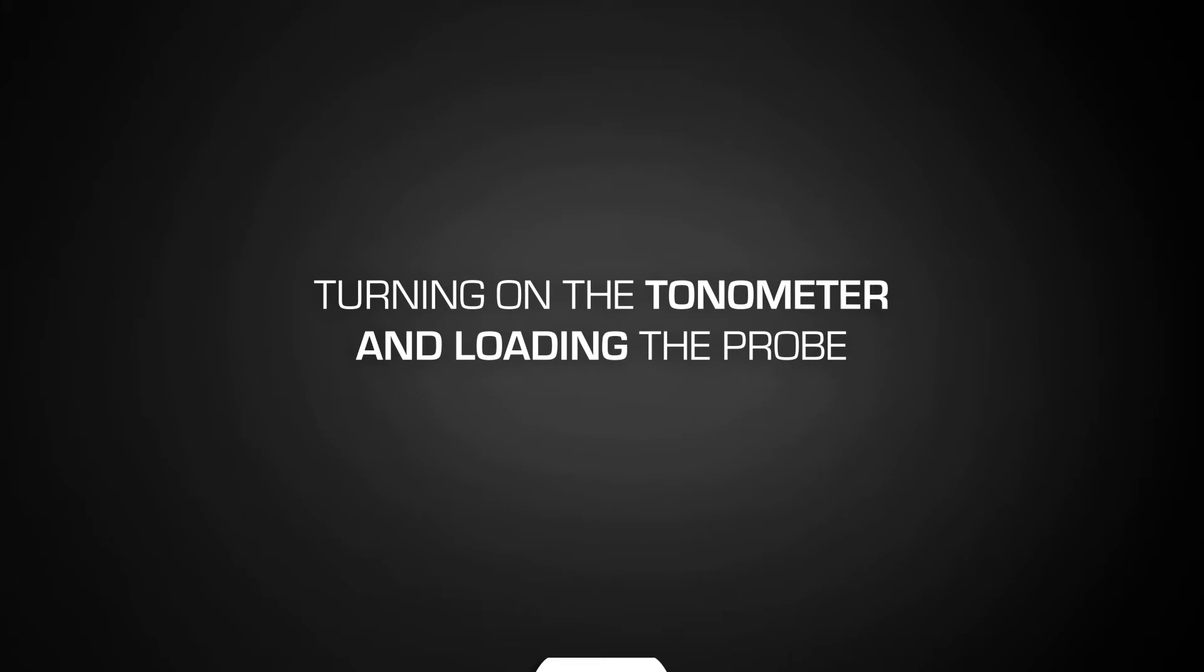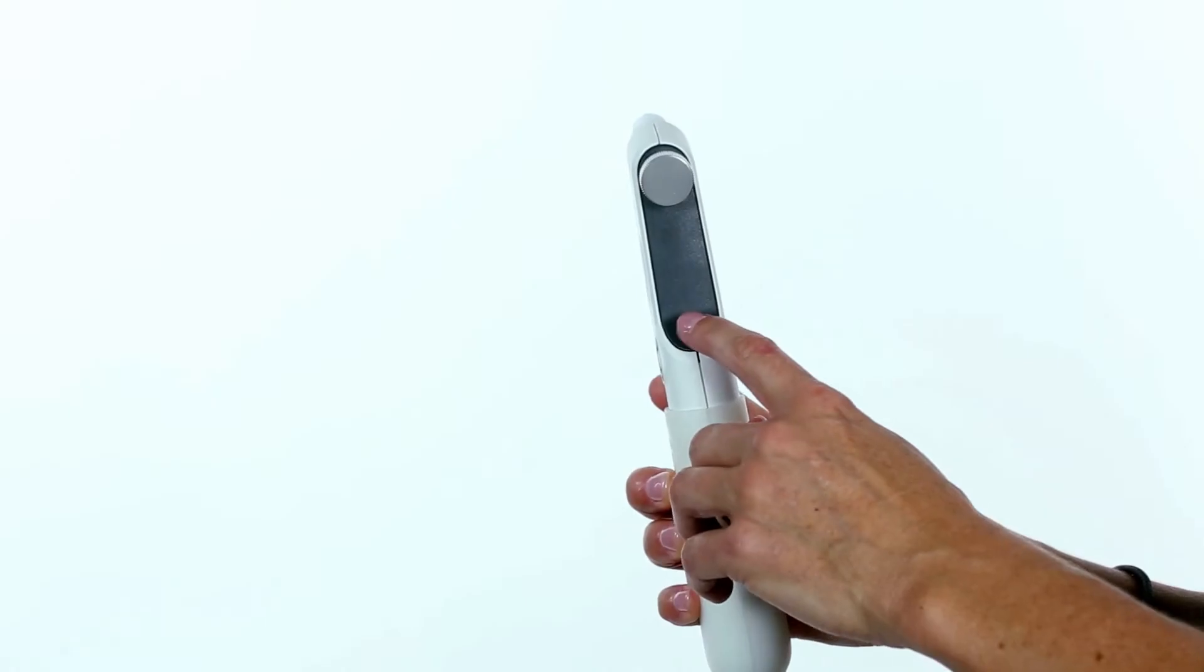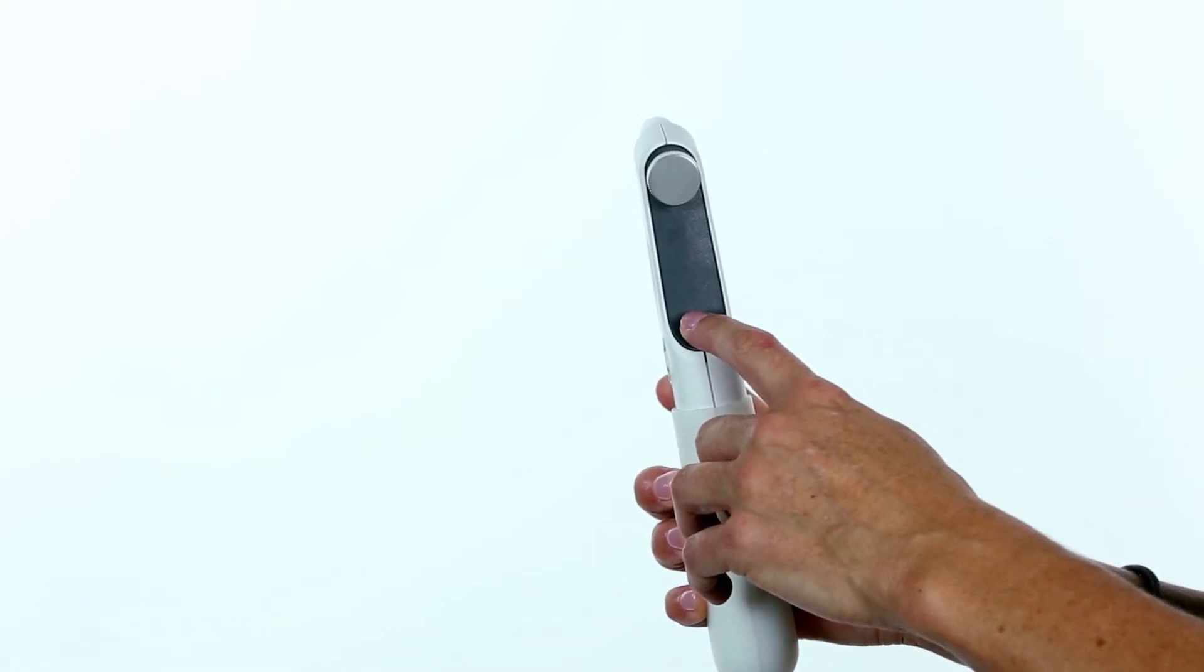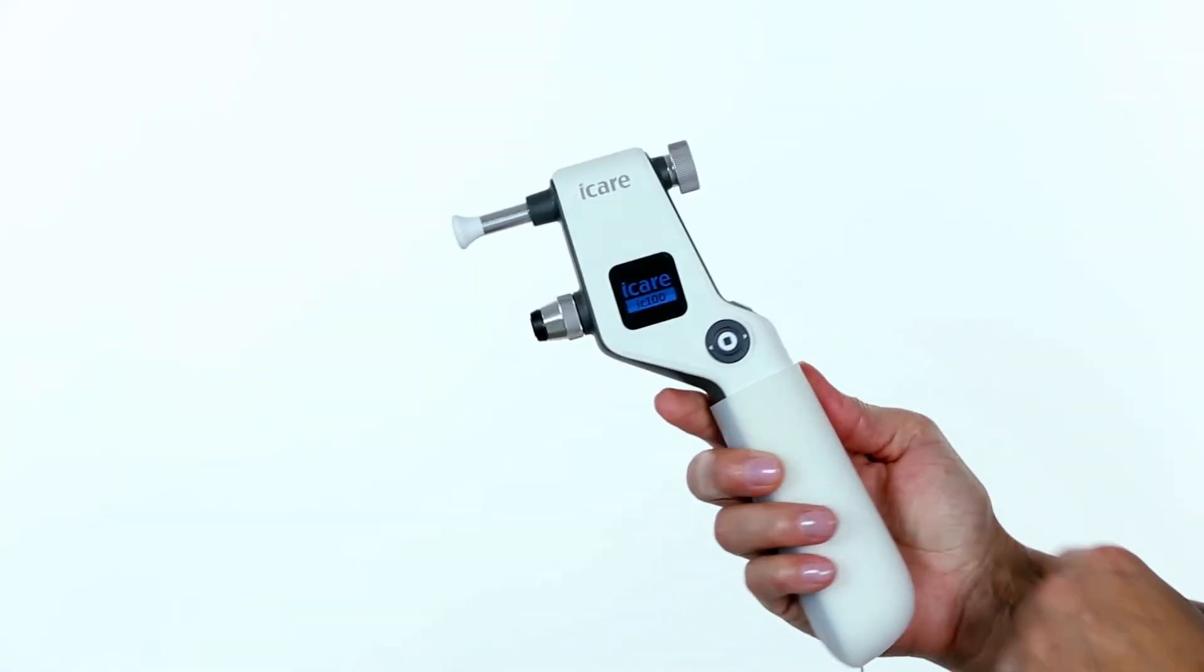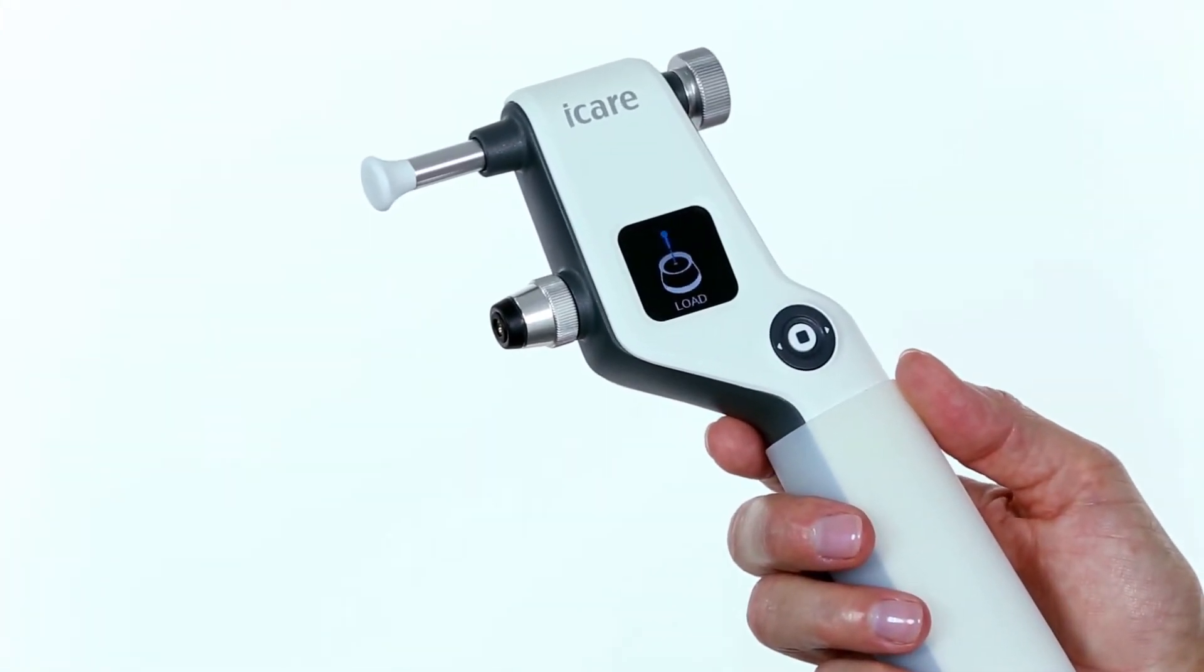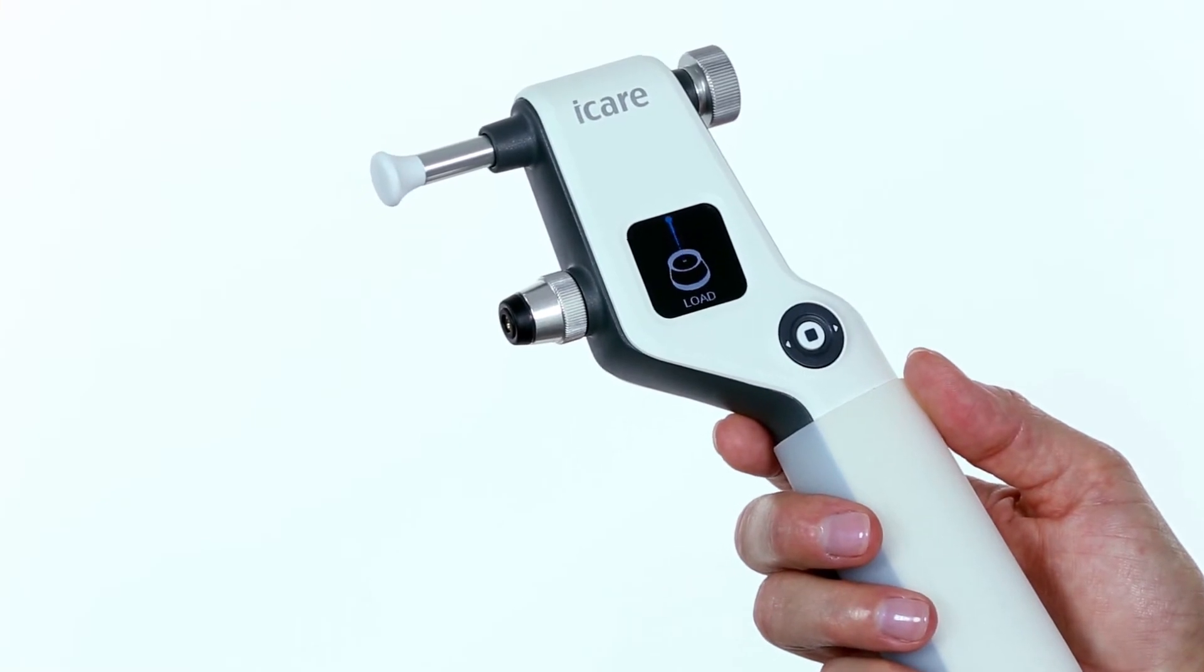Turning on the tonometer and loading the probe. To turn on the tonometer, press and hold the measure button for 3 seconds or until you hear a beep. Load the probe into the tonometer when the display screen shows Load Probe.